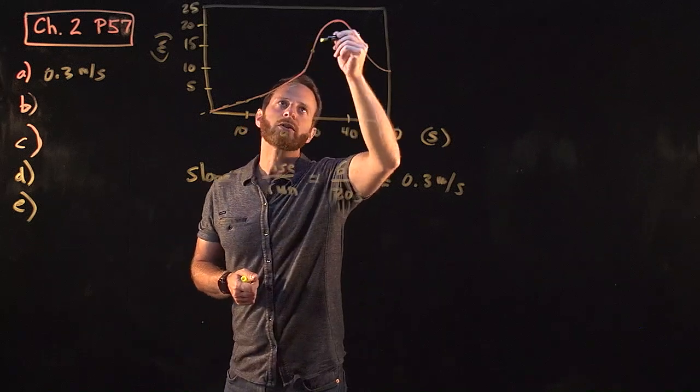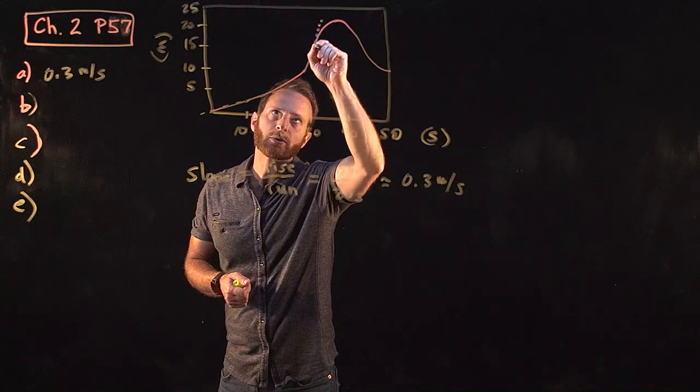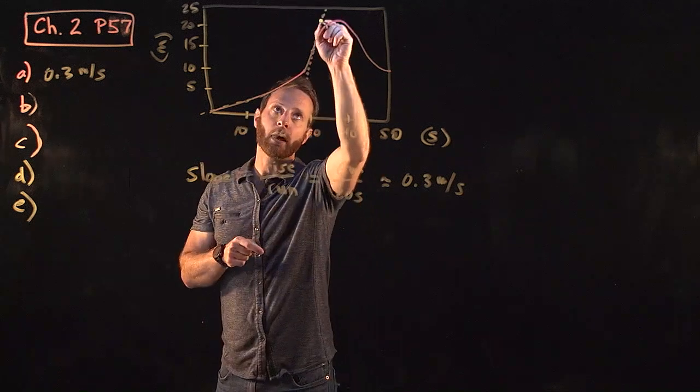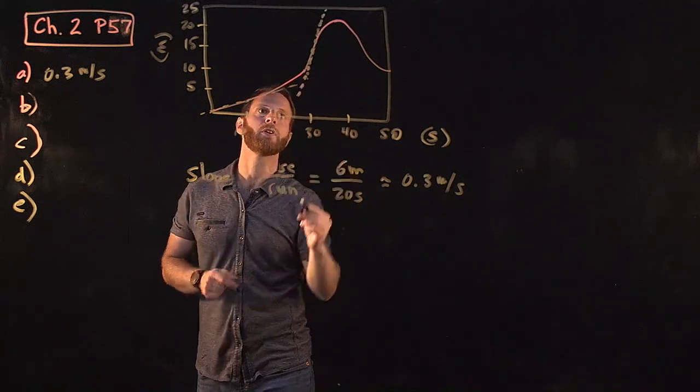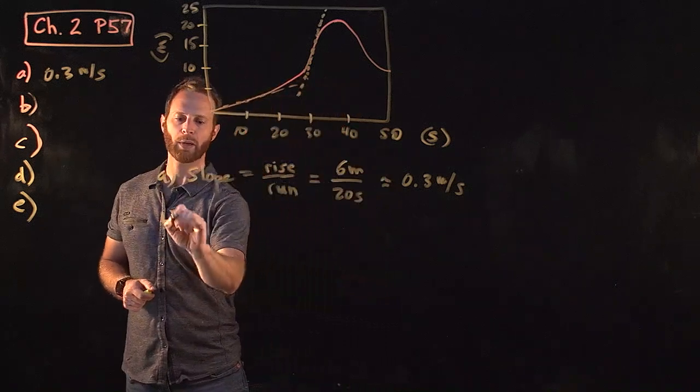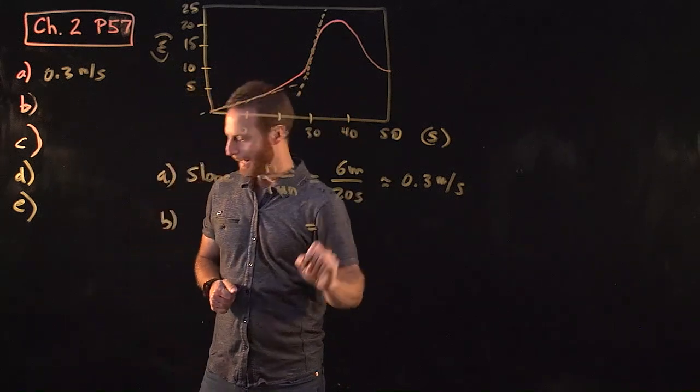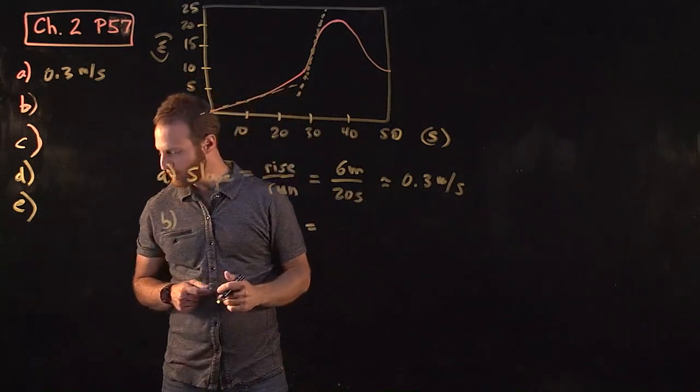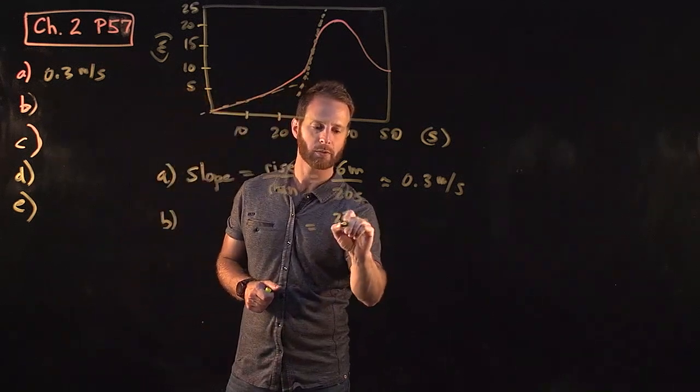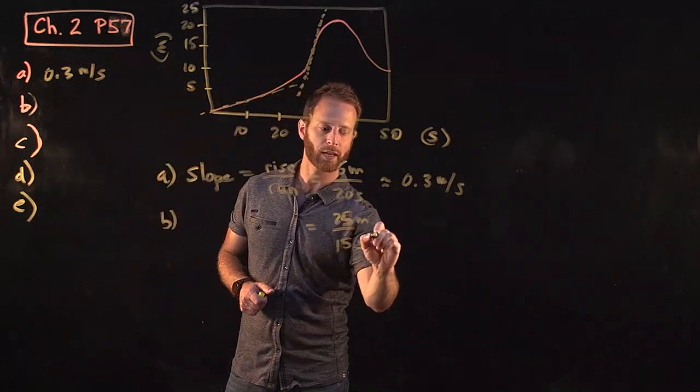Again, we're going to figure out the slope of a line that just passes through this point, and the best way to do that might be to extend that imaginary line as far as you can to figure out the rise over the run. For B, I estimate this to be about 25 meters over the course of about 15 seconds.